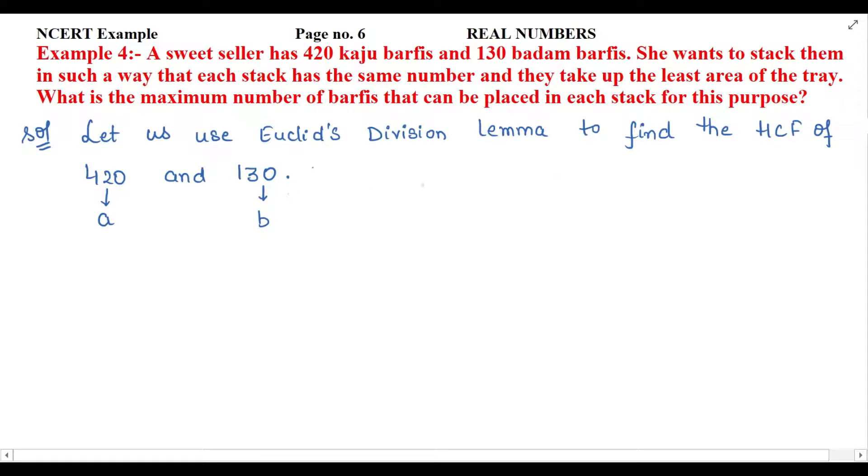We are using division lemma here. So when you divide 420 by 130, 13×3 is 390. So 420 minus 390, that will be 30.